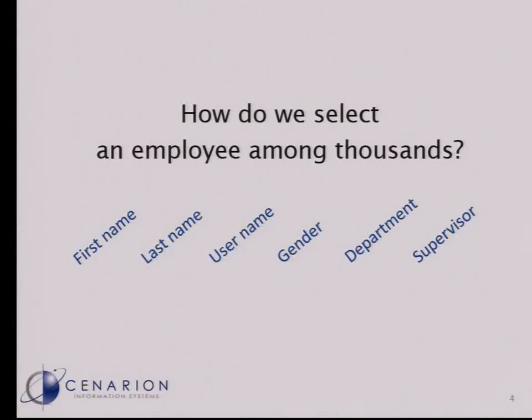We have employees and they have properties. An employee has a first name, a surname, a username, some gender, department, and a supervisor in our example case — in reality, some more properties. Let me show you first how such a table of employees looks like.